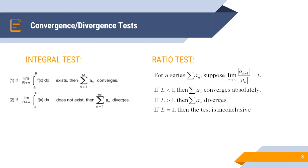Next we'll talk about the ratio test. You take the original series, then take the next term in the series and divide that by the first term of the series, and take the limit as it approaches infinity. If the limit is less than 1, the original series converges absolutely. If it's greater than 1, it diverges. If you get an answer of 1, the test is inconclusive and you have to find a different test. It works well with factorials and exponentials.